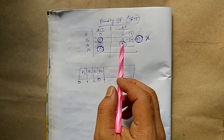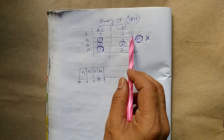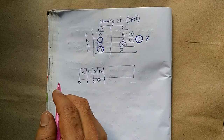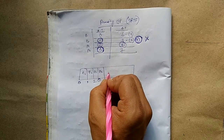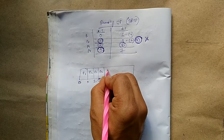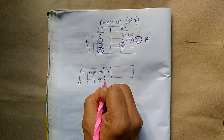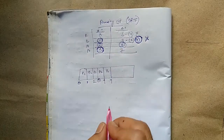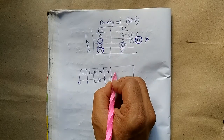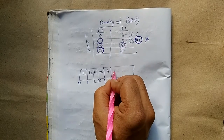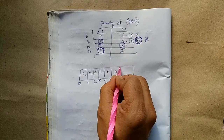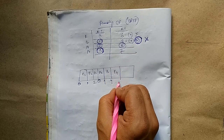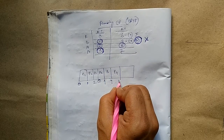Now there are 3 remaining processes with burst times of 5, 8, and 7. The minimum is 5, so we will execute process P1. So 4 plus 5 equals 9 — process P1 is executed. Next, we will select process P4 as its burst time is 7. So we will get 9 plus 7 equals 16.